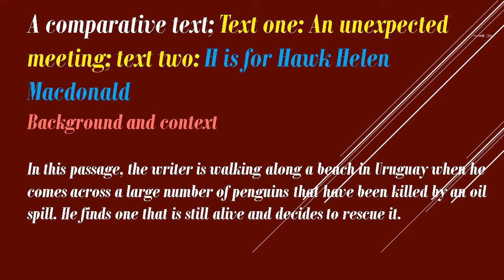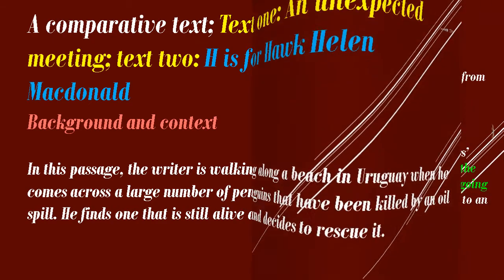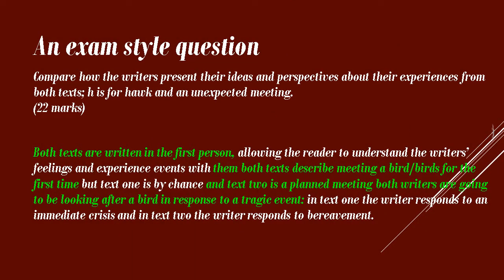Hello everyone. Today we have a comparative text exercise: Text 1 is 'Unexpected Meeting' and Text 2 is 'H is for Hawk' by Helen McDonald. In Text 1, the writer is walking along a beach in Uruguay when he comes across a large number of penguins that have been killed by an oil spill. He finds one that is still alive and decides to rescue it.